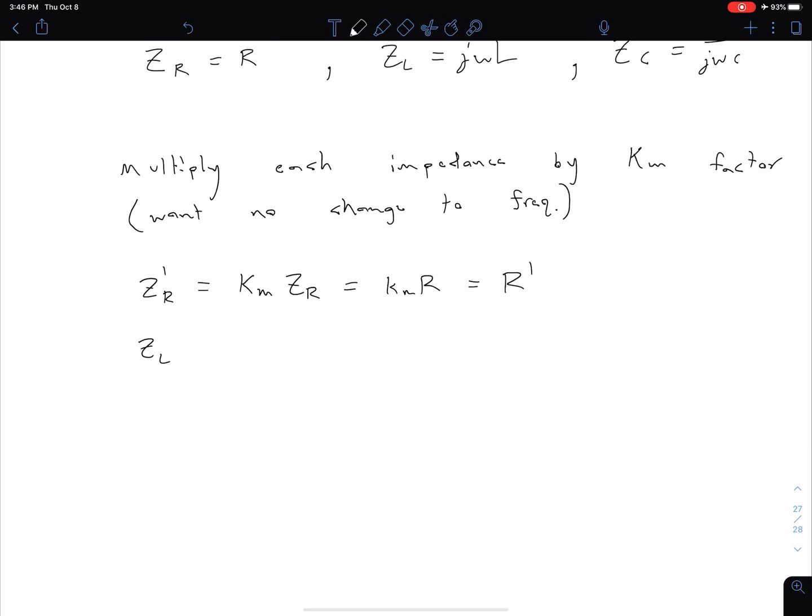Let's look now at our inductor. We're multiplying the impedance by Km, so we have Km times ZL. Plugging in for ZL, we have jω(KmL). But remember, we don't want to be adjusting the frequency. So this must equal jω times some L'. We've adjusted the inductance value.